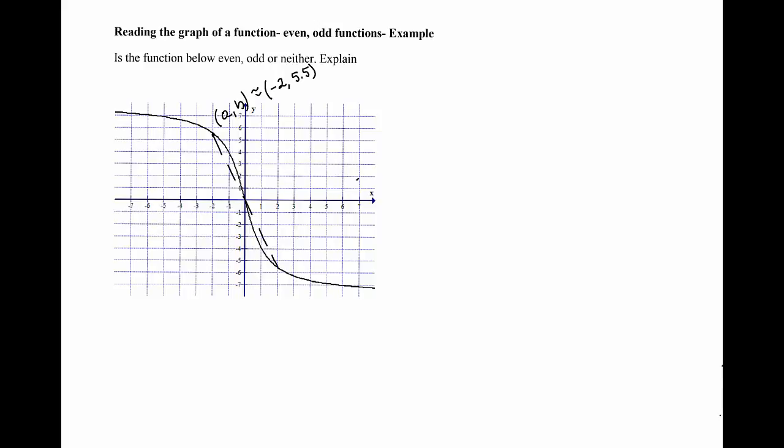And if you look at this point right here, this would be... I'm sorry, that point is (2, negative 5.5). This point is on the graph, and if you compare those two, you can see that one has coordinates AB and this one is the point negative A, negative B.